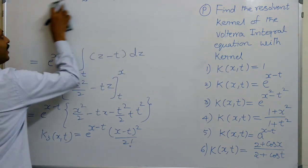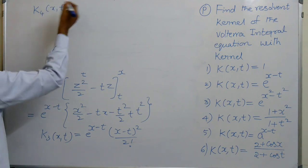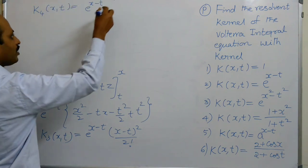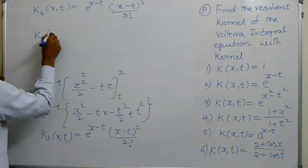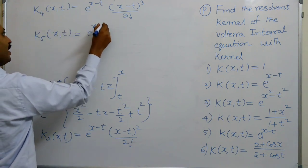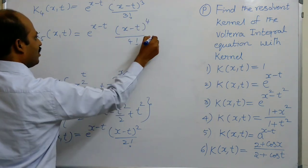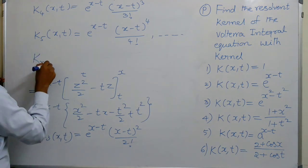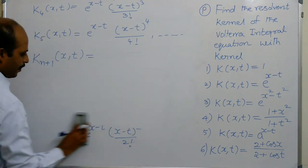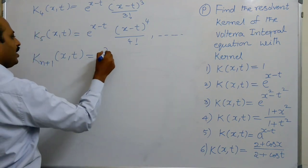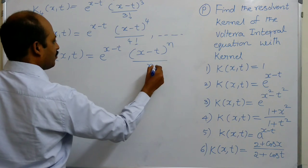Similarly K4, K5 and so on follow the same pattern. In general, K(n+1) of X, T equals e^(X minus T) times (X minus T)^n / n!.